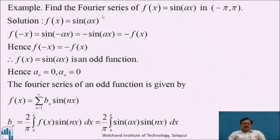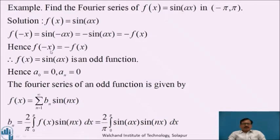Now we will see the examples. Find the Fourier series of f(x) = sin(ax) in the interval minus pi to pi. Now here f(x) = sin(ax). First of all we will test for even and odd function. Now f(−x), that is replacing x by minus x, we get f(−x) = sin(−ax) = −sin(ax) = −f(x). Hence f(−x) = −f(x), therefore f(x) = sin(ax) is an odd function.